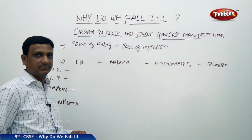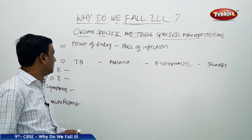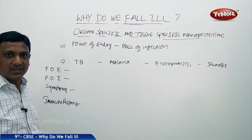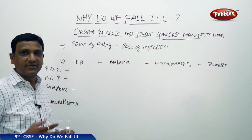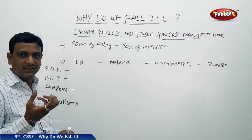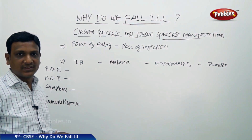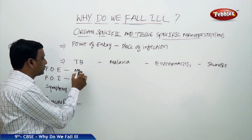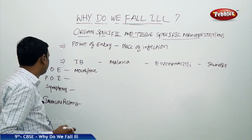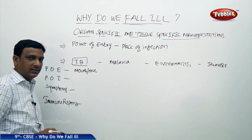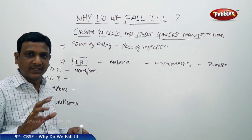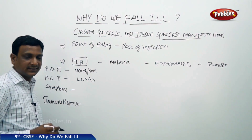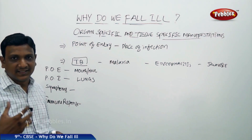Let us take as an example the first disease: TB. The TB germs enter as we discussed earlier — a person suffering from TB coughs or sneezes, droplets of spit enter the air and may enter another person's body. If you breathe those droplets, you are infected. So the place of entry is the mouth or nose. Even though these organisms enter through the mouth or nose, they do not settle there — they reach the lungs. TB affects the tissue present in the lungs.